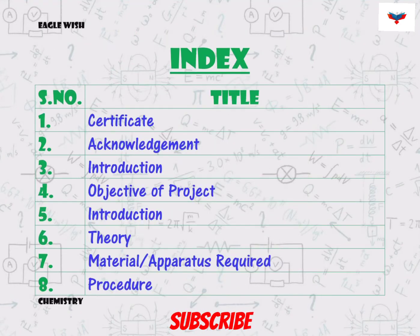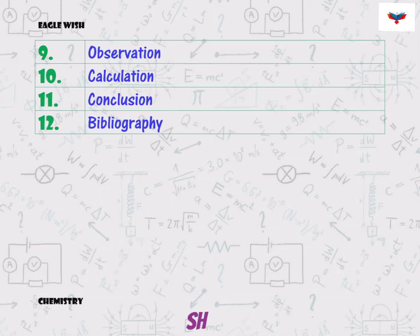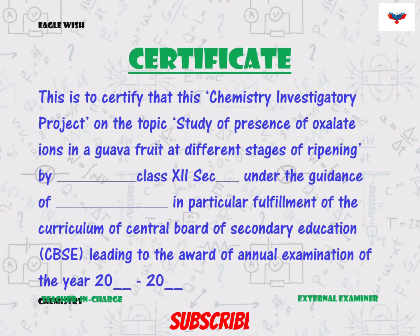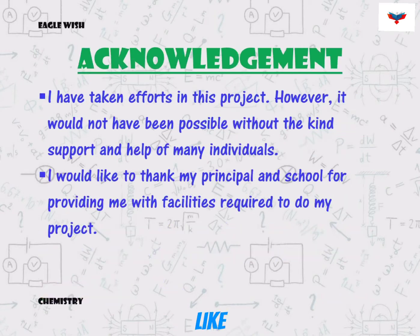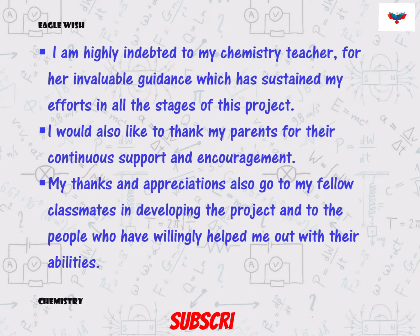Firstly we will write the table of content index of our project. After the index, make the certificate and acknowledgement. Try to make your project in a neat and clean manner.